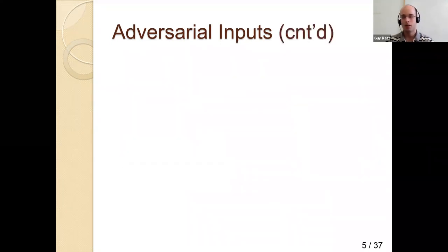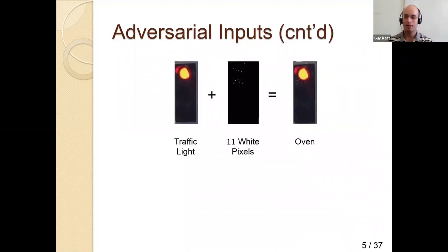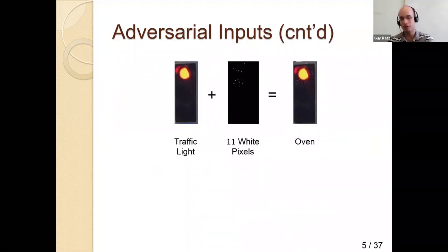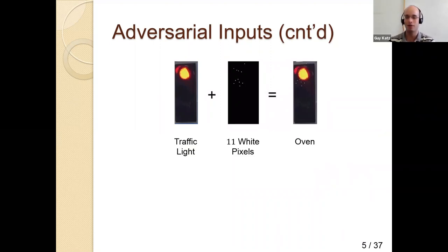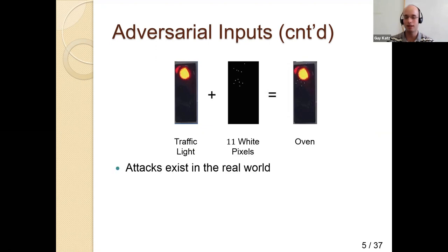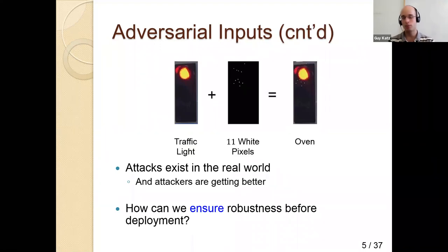You might say: big deal, a panda is misclassified as a gibbon. But consider autonomous driving — what happens if a deep neural network does traffic light recognition and 11 pixels are changed, causing the image to be classified as a kitchen oven? Attacks exist in the real world and attackers are getting very good at this. Our goal is to formally verify that our networks are robust before we deploy them.